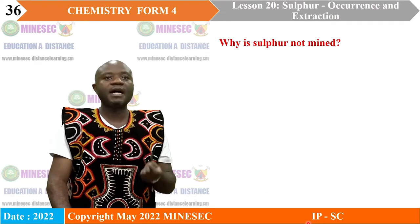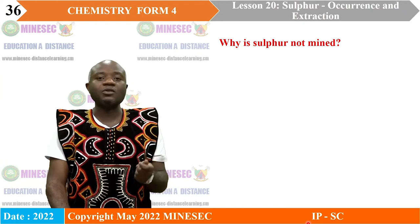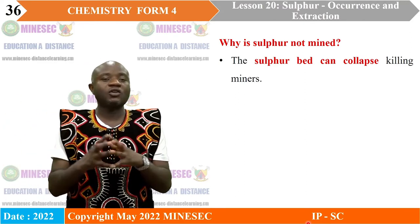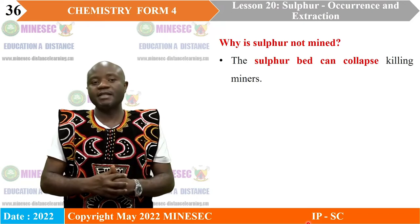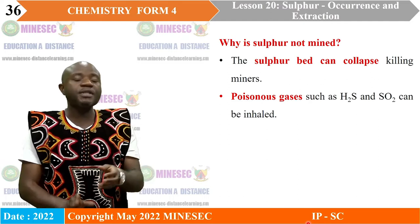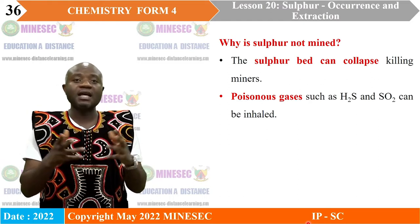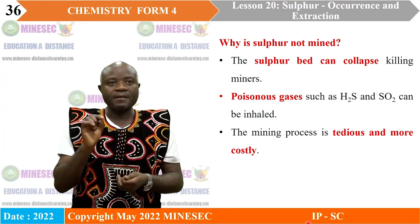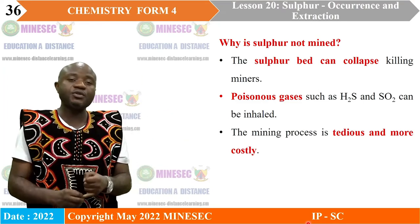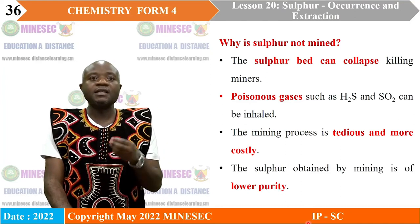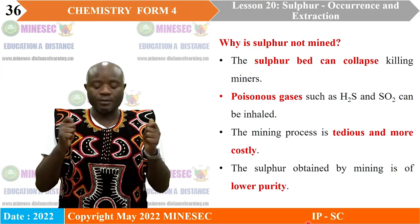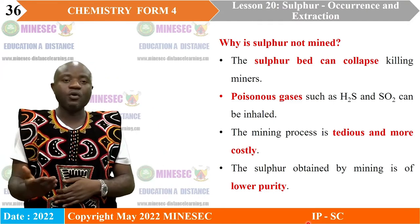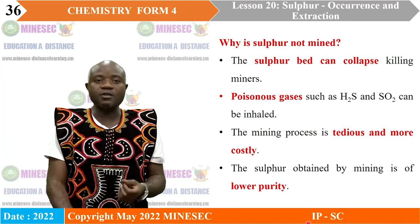Why is sulfur not mined? There are several reasons. First, the mine or sulfur bed can collapse, killing miners. Another reason is that during the mining of sulfur, poisonous gases like hydrogen sulfide and sulfur dioxide are produced and can be inhaled by miners. Mining of sulfur is also very tedious and expensive. And lastly, the sulfur obtained by mining is of lower purity compared to the Frasch process, which yields sulfur that is about 99% pure.